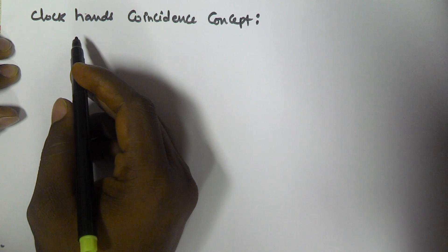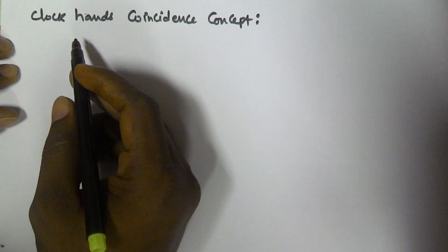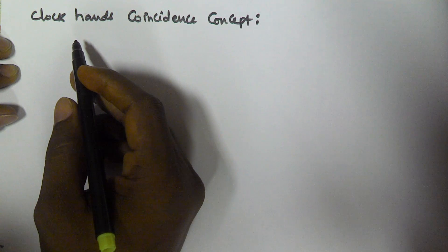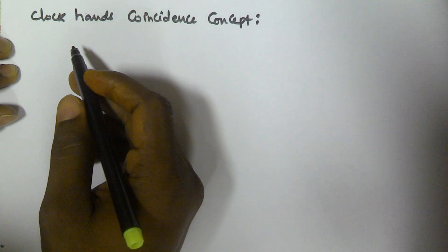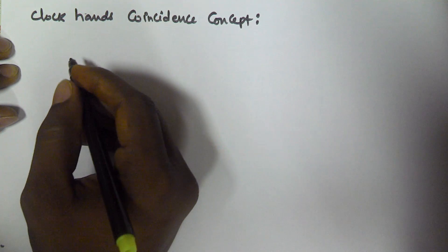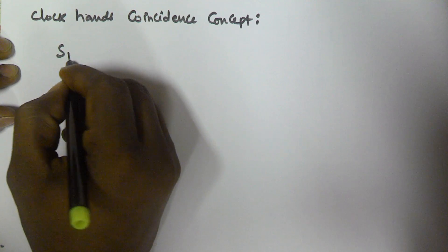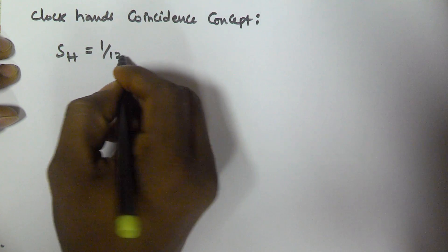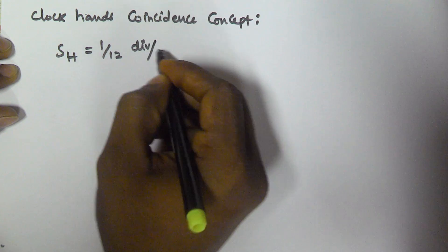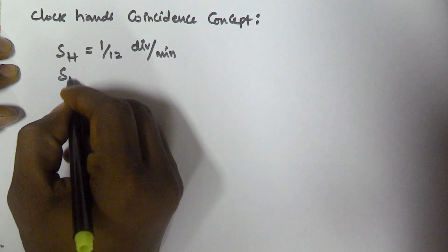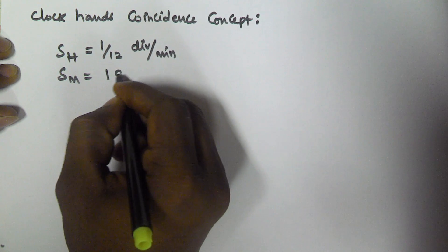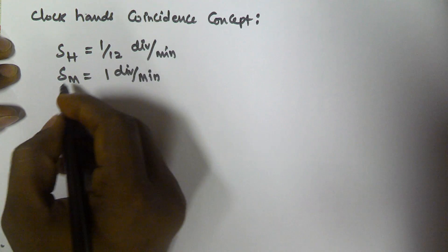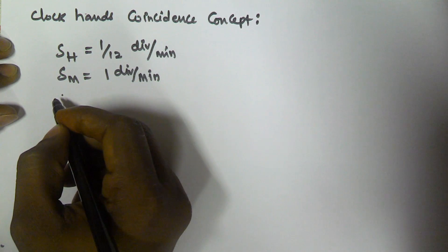So in this video, I will show you what time exactly both hands will coincide each other. In the previous video, we have seen that the speed of hour hand is 1 by 12 divisions per minute and speed of minutes hand is 1 division per minute. So both hands are moving in the same direction.